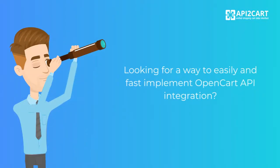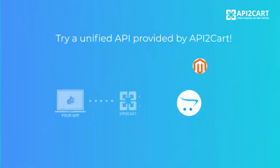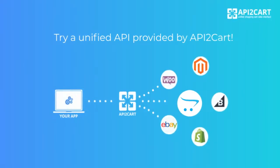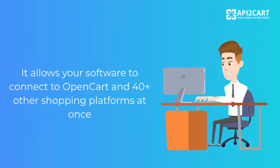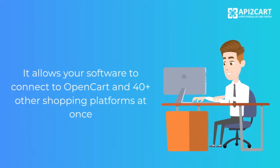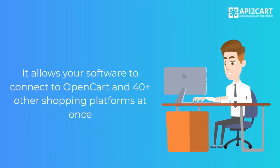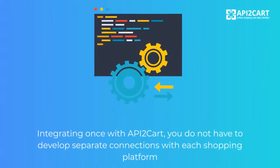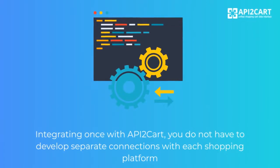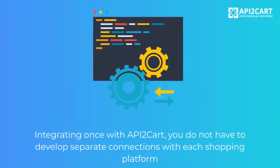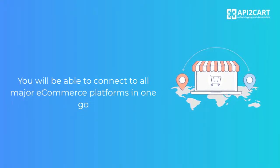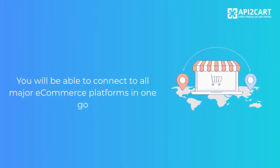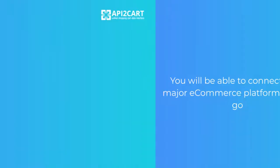Looking for a way to easily and fast implement OpenCart API integration? Try a unified API provided by API2Cart. It allows your software to connect to OpenCart and 40 plus other shopping platforms at once. Integrating once with API2Cart, you do not have to develop separate connections with each shopping platform. You will be able to connect to all major e-commerce carts in one go.